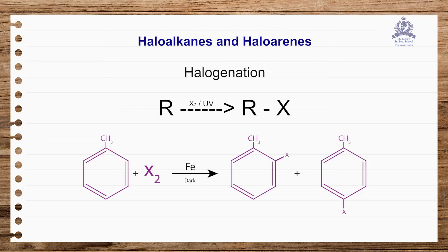Electrophilic substitution reactions are also there. Taking a benzene ring compound and doing halogenation in the presence of a catalyst under dark conditions will give aryl halides. The methyl group is an ortho- and para-directing group, so one isomer will be obtained in greater ratio.